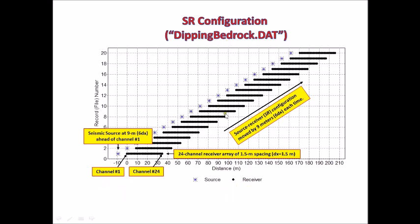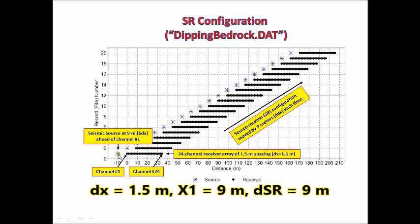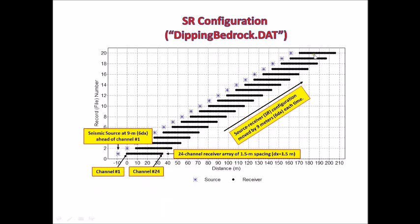This chart shows that record number 1 had a 24-channel receiver array located here, with a receiver spacing of 1.5 meters and a source offset of 9 meters. The source was located here, and then the entire source-receiver configuration moved each time by 9 meters, 19 times, to generate a total of 20 field records.